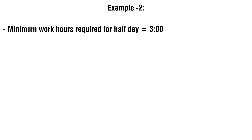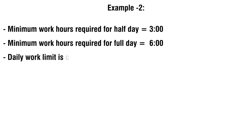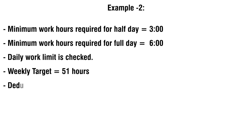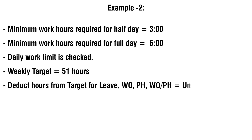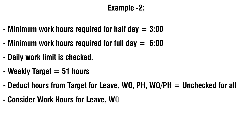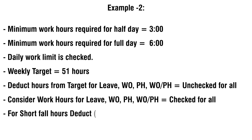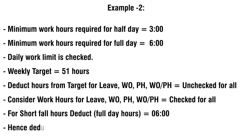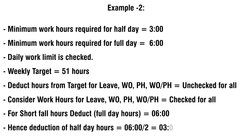Example 2. Minimum work hours required for half day is 3. Minimum work hours required for full day is 6. Daily work limit is checked. Weekly target is 51 hours. Deduct hours from target for leave, week off, or public holiday is unchecked for all. For shortfall hour deduction, deduct full day hours is 6. Hence, deduction for half day hours is 6 divided by 2, that is 3. Punches are as under.